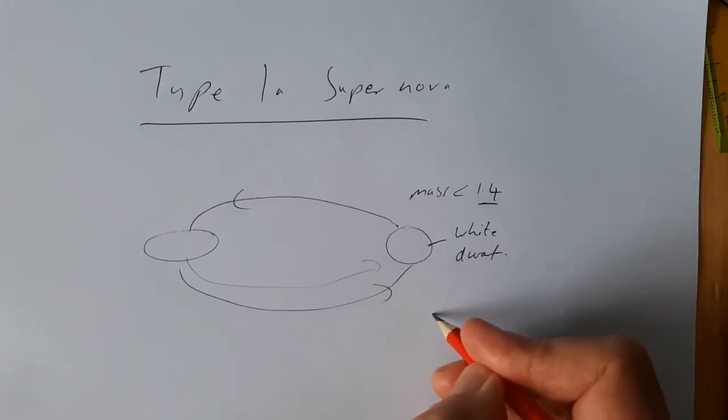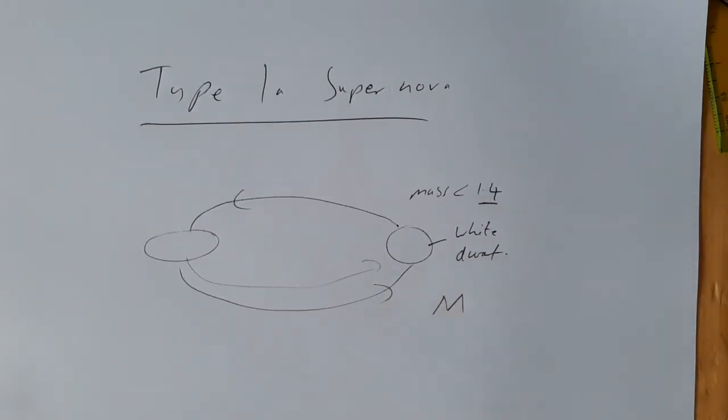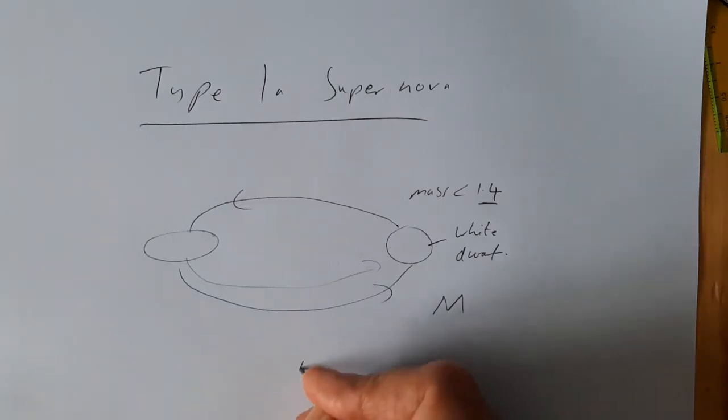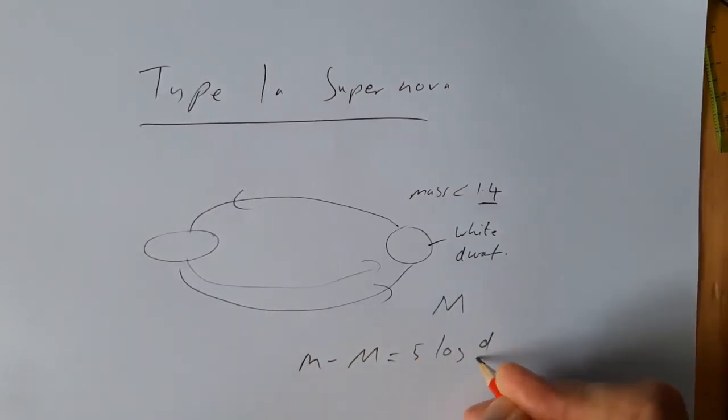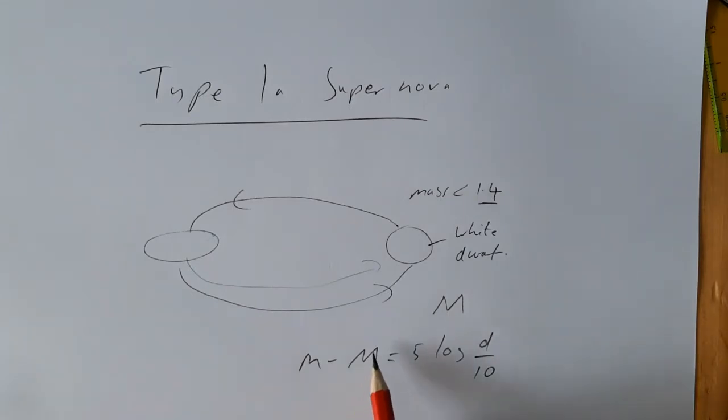As far as we know, every type 1a supernova has the same brightness. It has the same absolute magnitude. And as I've just shown you on the previous sheet of paper, if we know the absolute magnitude then we know how far away the object is.